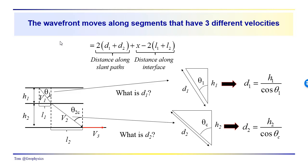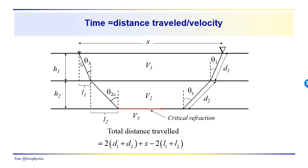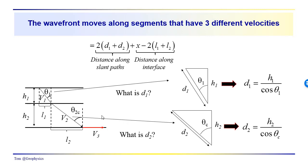We have a wavefront that travels along three different segments at three different velocities: the slant path distances are twice the sum of d1 and d2, and the distance along the interface. Now, d1 is just h1 divided by cosine of theta 1, since cosine theta 1 equals h1 over d1. Similarly, d2 equals h2 divided by cosine of theta critical — the angle the ray path makes with the vertical in layer 2, producing a refraction angle of pi over 2, with the ray traveling at velocity v3.